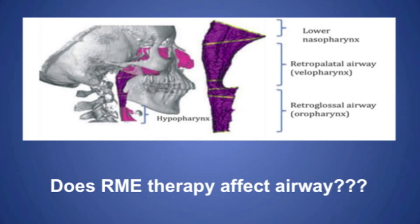Because airway problems — for example, obstructive sleep apnea syndrome — can significantly reduce quality of life. However, previous studies on the airway are limited by 2D structures. With the help of cone beam CT technology, airway problems have been studied three-dimensionally, but the results from different studies are controversial.